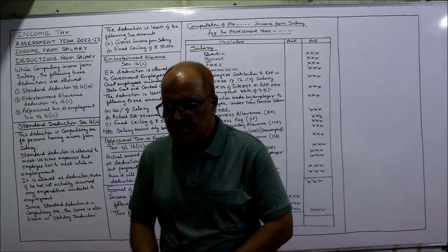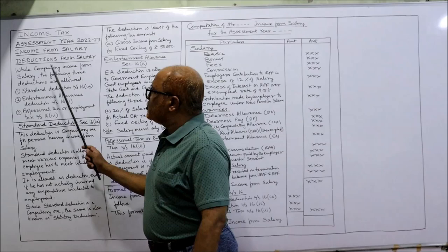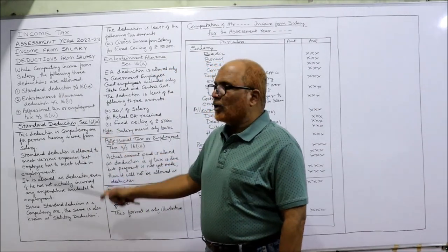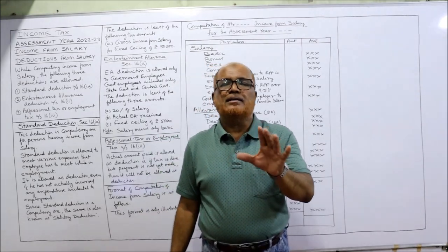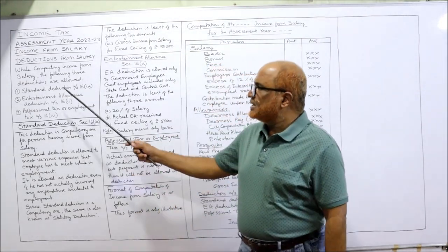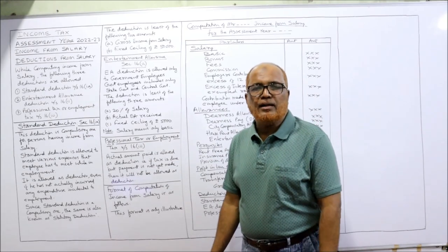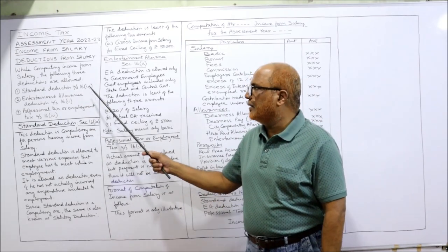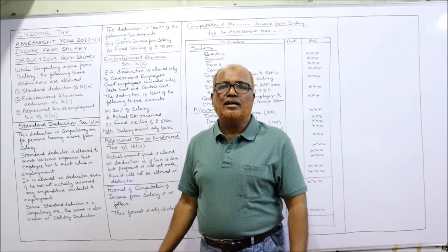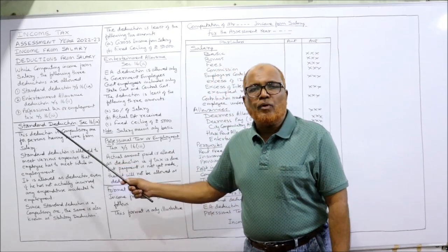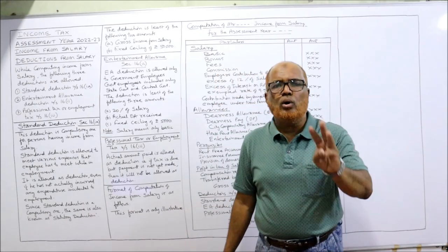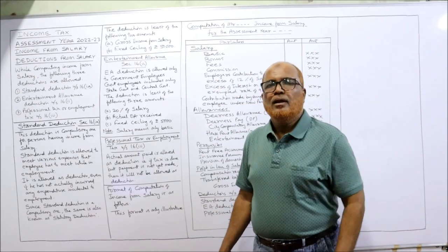Deductions from salary while computing income from salary — the following three deductions are allowed. Income Tax Act has given three deductions from gross income from salary: the first is standard deduction under Section 16(1A), then entertainment allowance deduction under Section 16, and professional tax or employment tax under Section 16. Only three deductions.